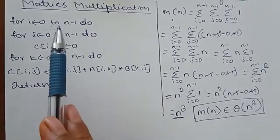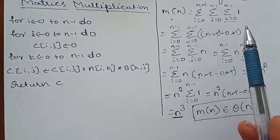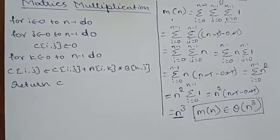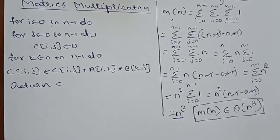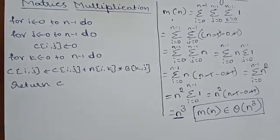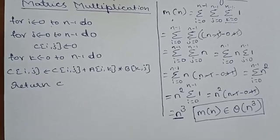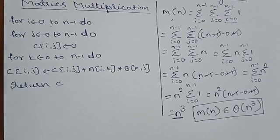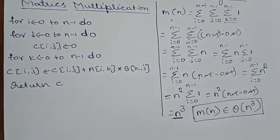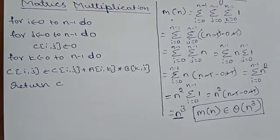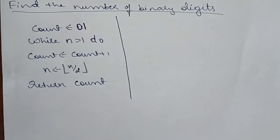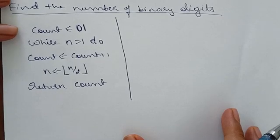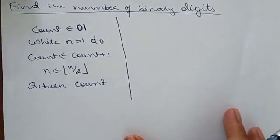When we have different for loops, we take summations accordingly and solve them. However, it is not always the case that algorithms have for loops. If there is no for loop, what do we do? I'll take one more example algorithm to explain that case.